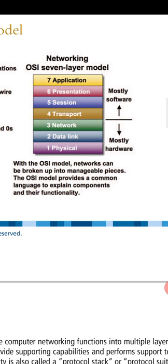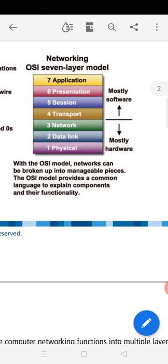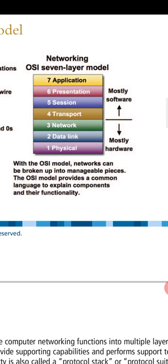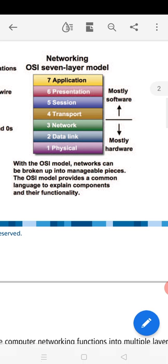The OSI model basically consists of seven layers which start from physical, data link, network, transport, session, presentation, and the last but not least is the application layer.